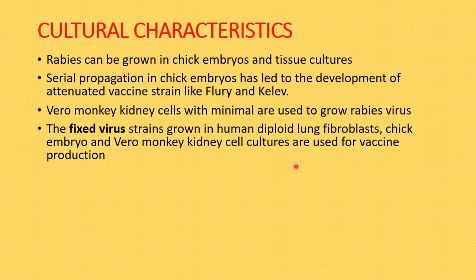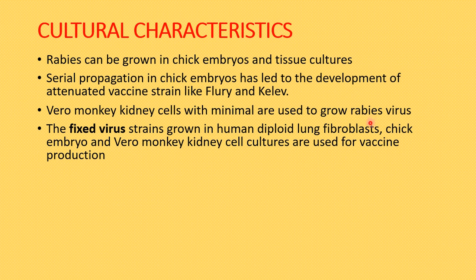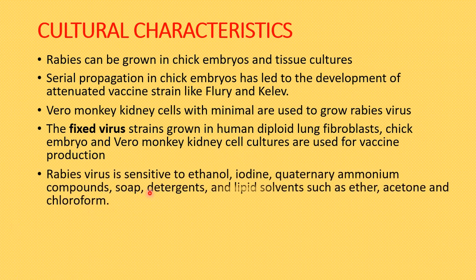Several primary and continuous cell cultures — including chick embryo fibroblast, mouse neuroblastoma, and human diploid lung fibroblast — have been used to cultivate the virus. Vero monkey kidney cells are also used to grow the rabies virus. Fixed virus strains grow in human diploid lung fibroblast and Vero monkey kidney cell cultures, which are used for vaccine production, whether attenuated or other vaccine types.